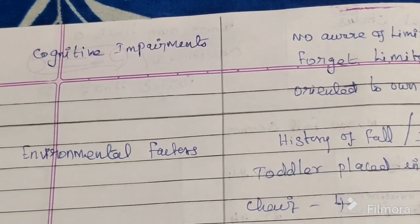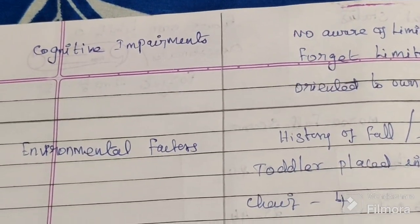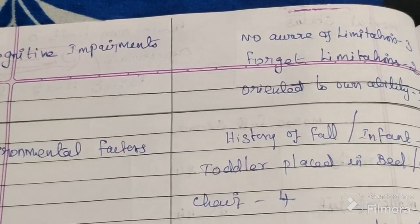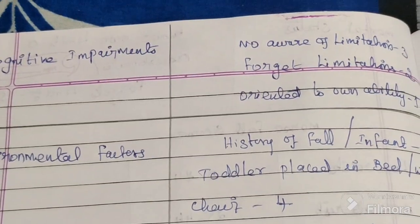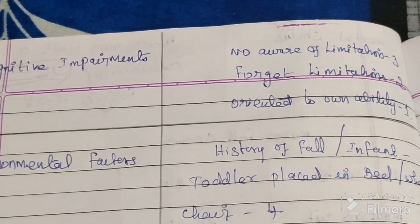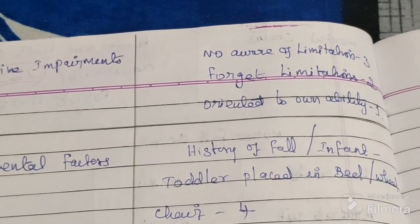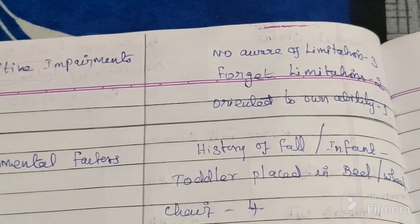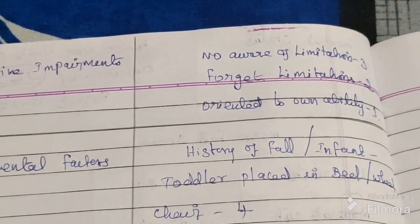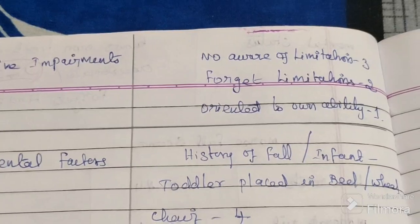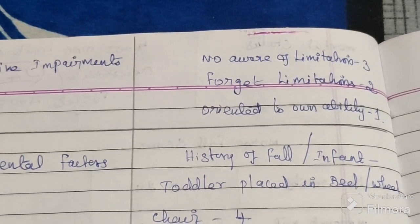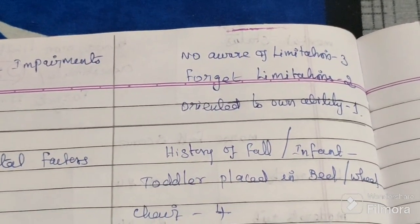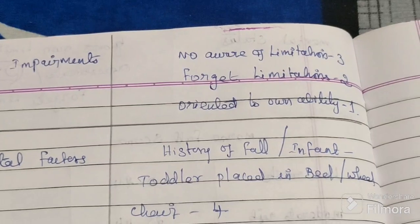The fourth variable is cognitive impairment. If the child is not aware of their limitations, give a score of 3. If they forget their limitations, give a score of 2. If they are oriented to their own ability, give a score of 1.